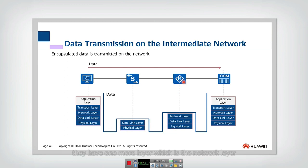For the router, they have one more layer, which is the network layer. They need to forward the packet to the correct outgoing link according to the IP address of the destination. And finally, they arrive to the receiver.